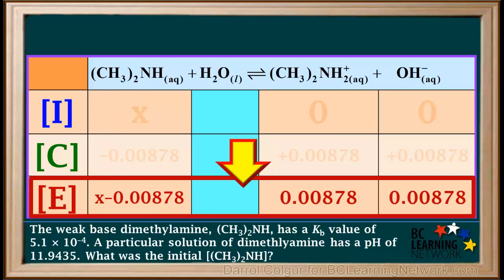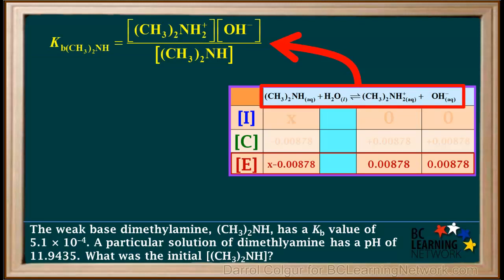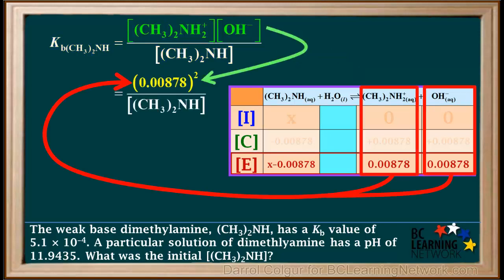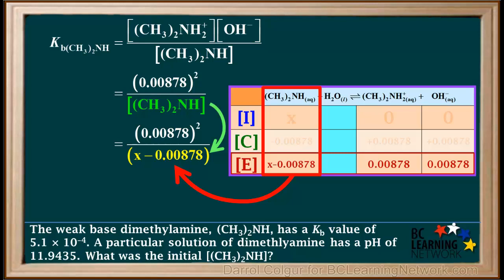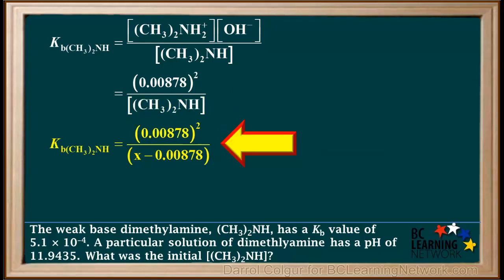We now have the equilibrium concentrations of all three species. In order to solve for X, we substitute these into the Kb expression for dimethylamine. We use the equilibrium equation to write the Kb expression for the weak base (CH₃)₂NH. It's the concentration of (CH₃)₂NH₂⁺ times the concentration of OH⁻, over the concentration of (CH₃)₂NH. Substituting 0.00878 in for the concentrations of (CH₃)₂NH₂⁺ and OH⁻, we get that their product is 0.00878 squared. And we substitute X minus 0.00878 in for the concentration of (CH₃)₂NH. So now we have: Kb of dimethylamine equals 0.00878 squared over X minus 0.00878.